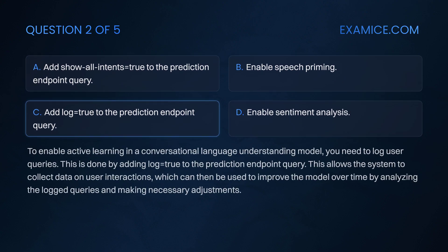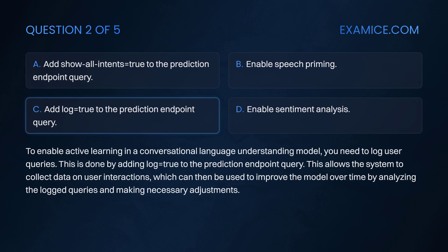To enable active learning in a conversational language understanding model, you need to log user queries. This is done by adding log equals true to the prediction endpoint query. This allows the system to collect data on user interactions, which can then be used to improve the model over time by analyzing the logged queries and making necessary adjustments.